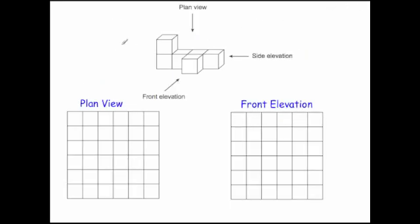Here we've got a typical GCSE question. There's a picture of a solid that is labeled for you — it labels the plan view, the side elevation, and the front view, telling you what perspective you're looking from. The plan view is from above. Looking at this shape from above, you would see four squares in a row, and then one square coming down from the third one along.